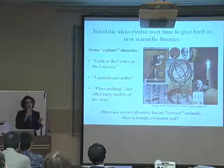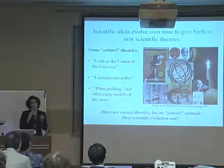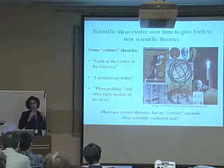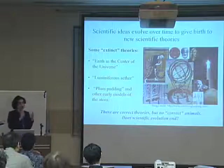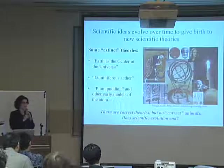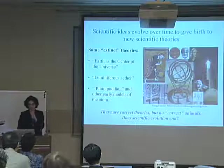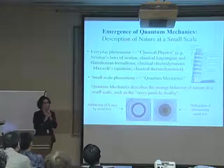Does evolution have an end? Well, evolution of animals and plants does not have an end goal of delivering a perfect animal. Perhaps in science we do have that goal — reaching a complete and perfect theory. I will come back to this question towards the end of this talk. But for now, I'm going to give those from different backgrounds a few notions about quantum mechanics that will help you understand the rest of this talk.